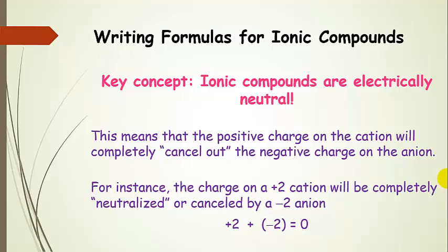You have to cancel out the positive charge on the cation with the negative charge on the anion. And they don't need to be 1 to 1 — often they are, but the number of cations to the number of anions doesn't necessarily need to be 1 to 1. The bottom line is you have to make sure that all of that charge is canceled out.